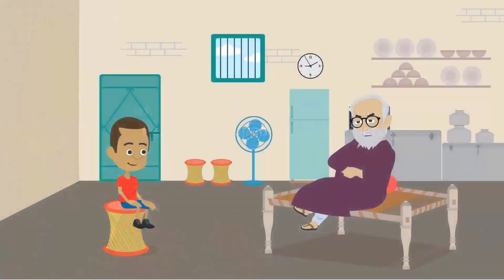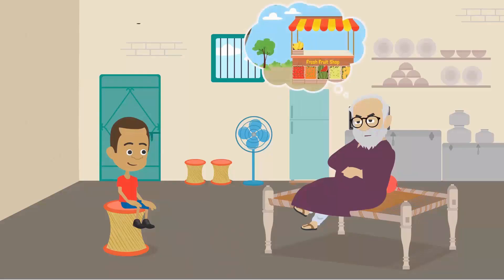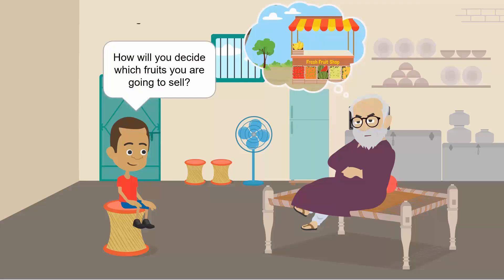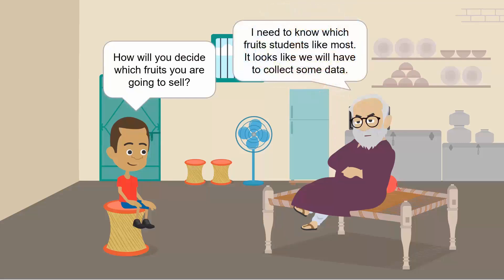Meet Dadajaan. Dadajaan is a true believer of healthy eating, that's why he decided to set up a fruit shop. In Asif's school, how will you decide which fruits you are going to sell? I need to know which fruits students like most. It looks like we will have to collect data.